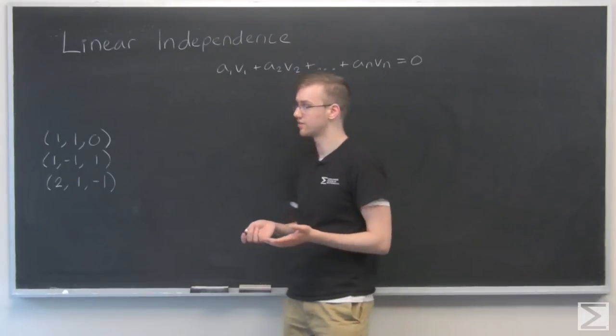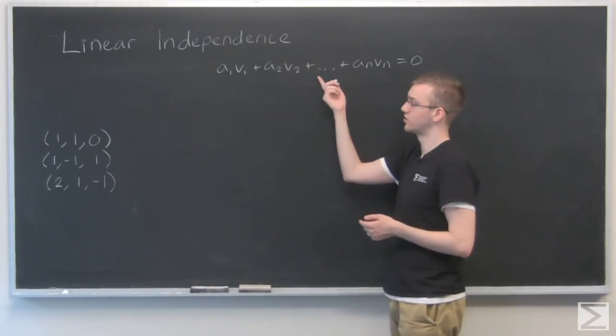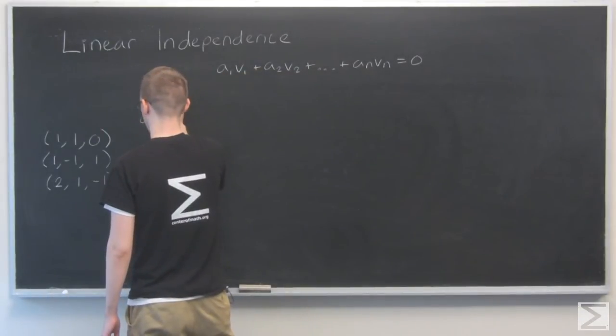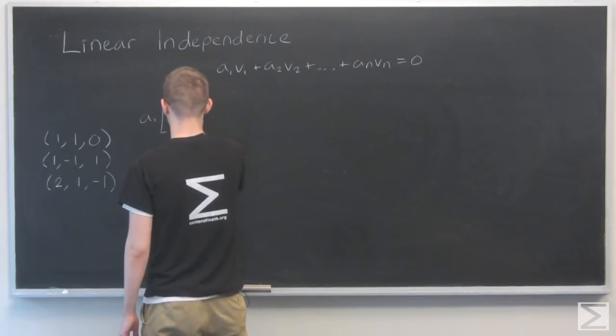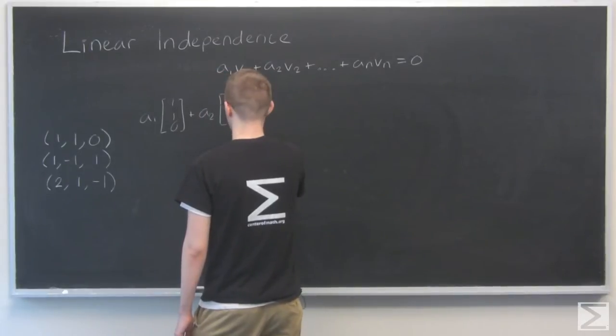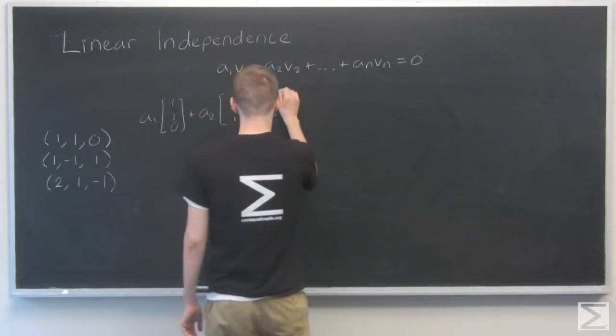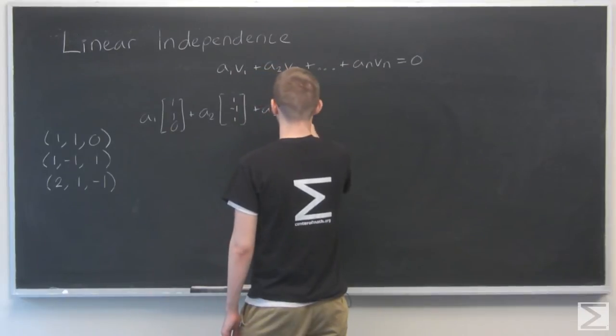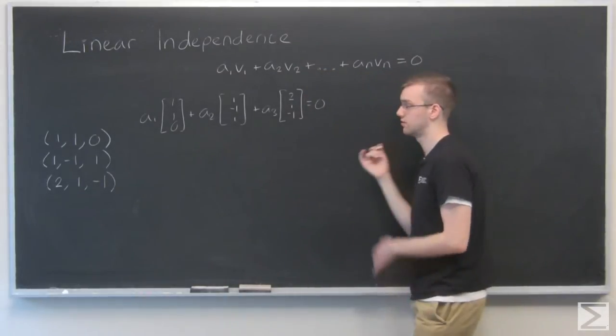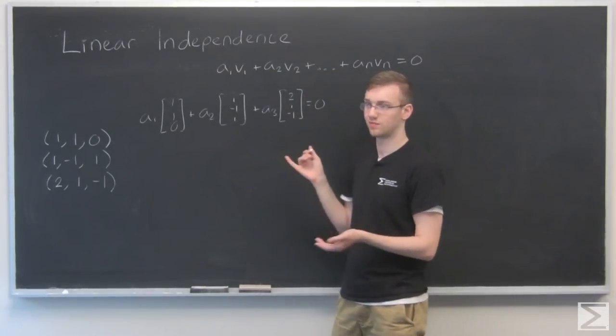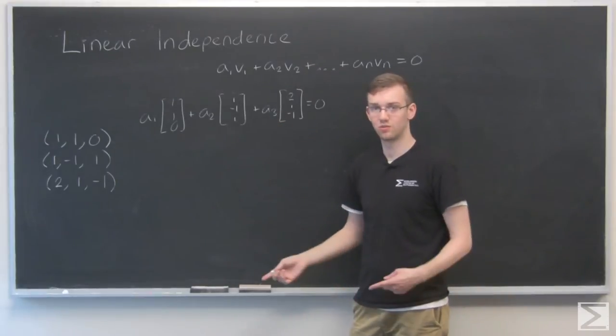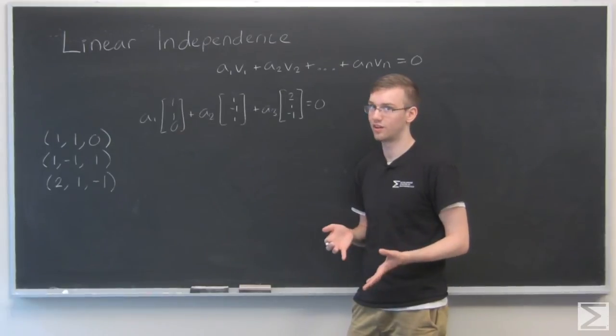Are these three vectors linearly independent? So how do we go about finding this? We can look at if we think about the equation like this. We'll have a1 times the vector 1 1 0 plus a2 times the vector 1 minus 1 1 plus a3 times the vector 2 1 minus 1 and set that equal to 0. So here we have basically a system of linear equations. We can make a coefficient matrix with this and solve for what a1, a2, and a3 will be. And hopefully all of them will be 0.